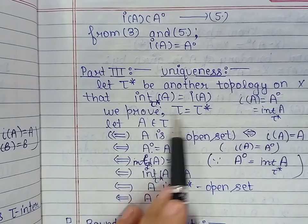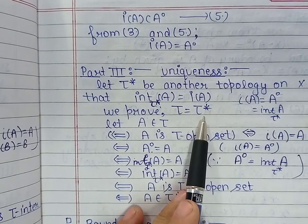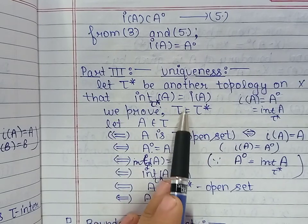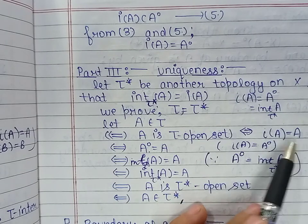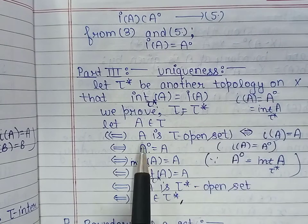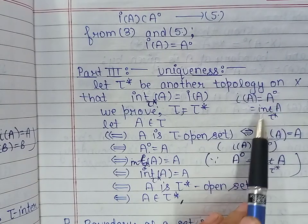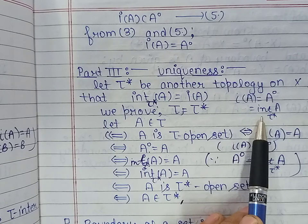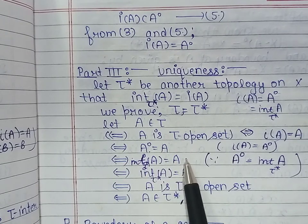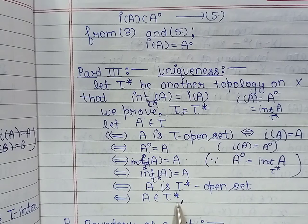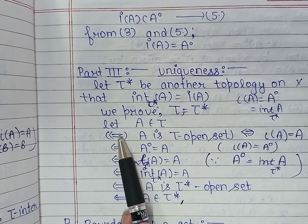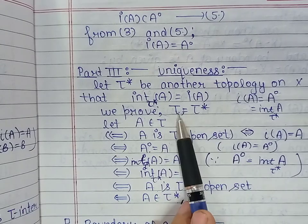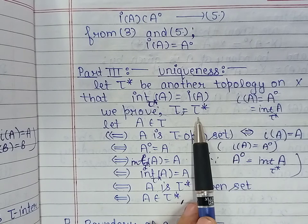We must prove that τ and τ* are the same topology. Take an arbitrary member A from τ. By definition of τ, I of A equals A. Since I of A equals A°, we have A° equals A. And A° equals the τ*-interior of A, so the τ*-interior of A equals A, meaning A belongs to τ*. Thus τ is contained in τ*. Proceeding these steps in reverse, we can likewise prove τ* is contained in τ. Combining both, τ equals τ*, completing the proof of uniqueness. This completes the method of obtaining a topology by using the properties of the interior operator.